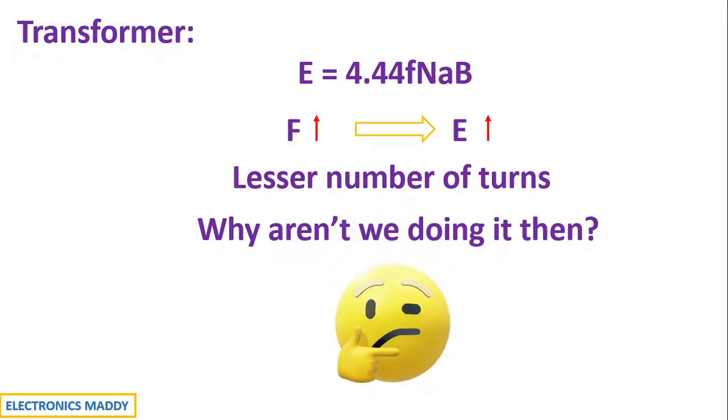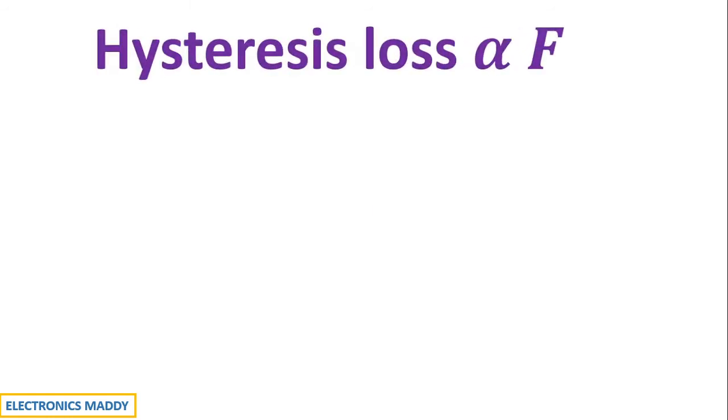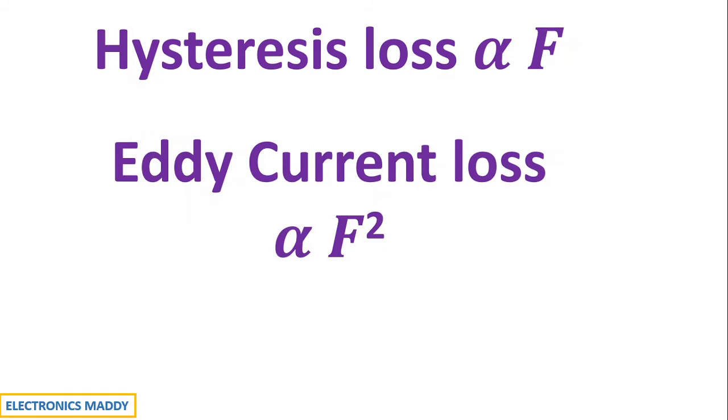It is because of the losses. Hysteresis loss in a transformer is directly proportional to frequency, whereas eddy current loss is directly proportional to the square of the frequency. Therefore, as frequency increases, the losses also increases and hence we go with an optimum value of frequency such as 50 Hz or 60 Hz.